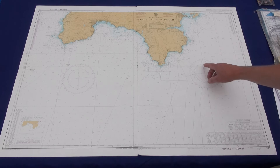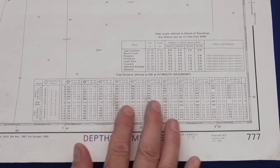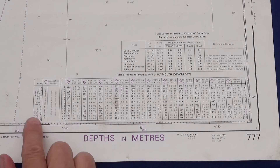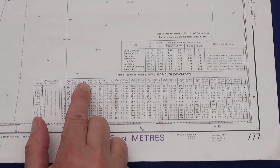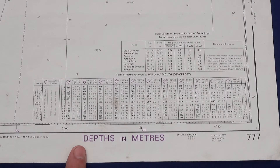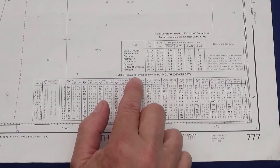In the bottom right-hand corner is the tidal stream table. On the left-hand side is a description of how to use it. Each one of these diamonds is a position on the chart, and tidal streams in this case are referenced to high water at Plymouth. We'll look at that a little bit later.